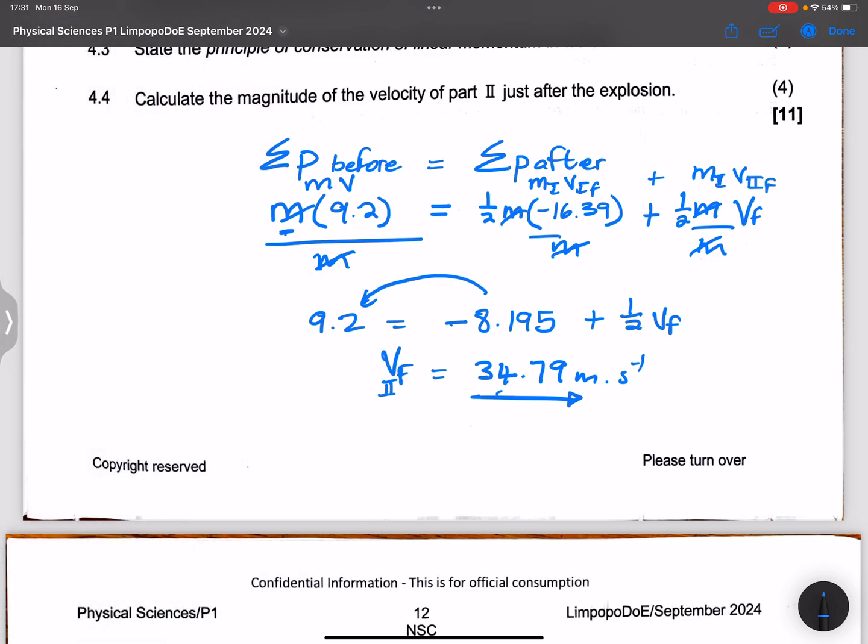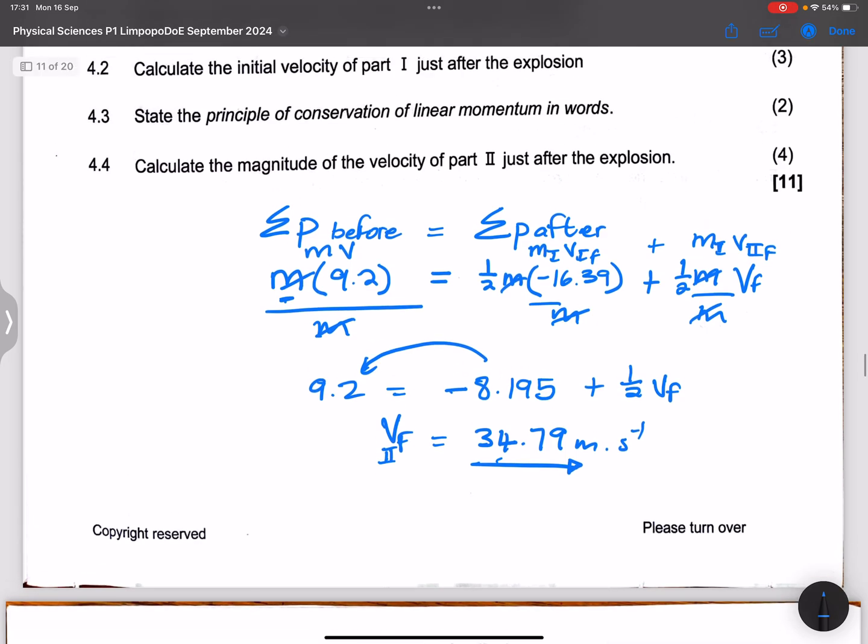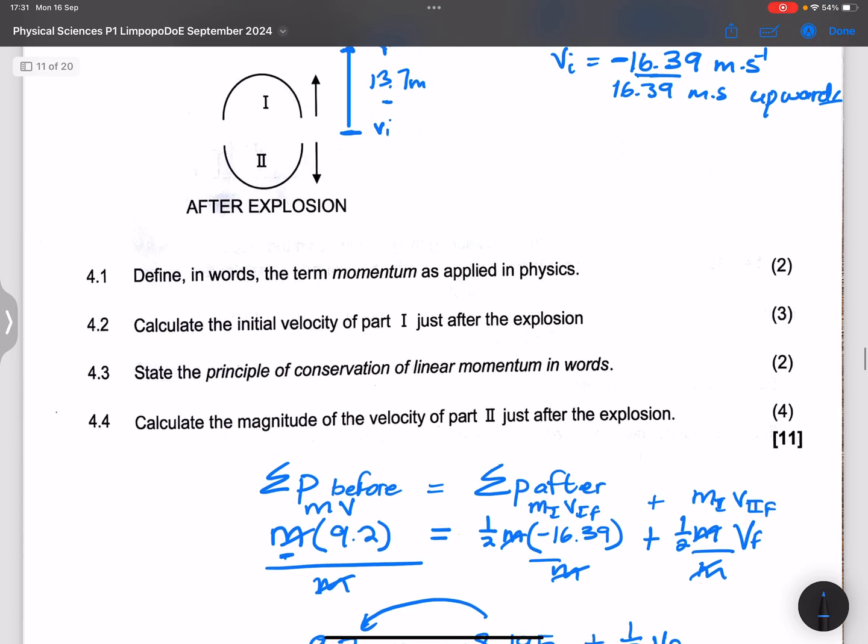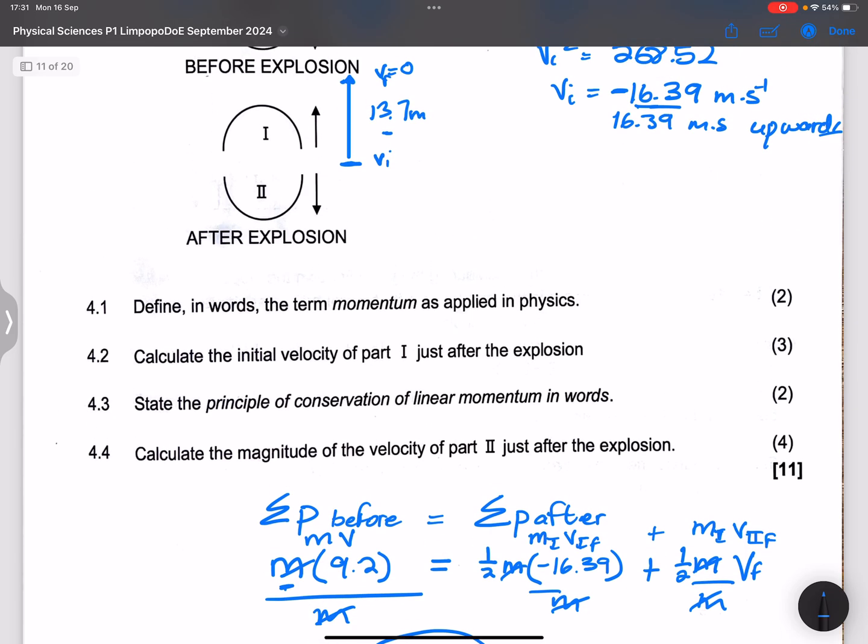So this is the velocity of part two after collision. It would be 34.79, please verify this and make sure that you get to the right answer. And that is really how the cookie crumbles. Very interesting question this, and we leave it there and we're going to move on to question five.